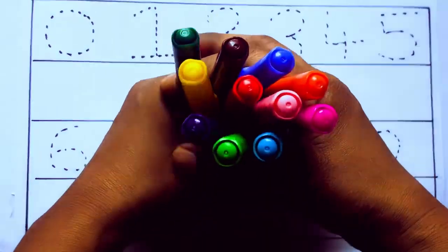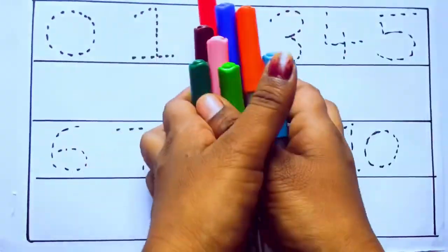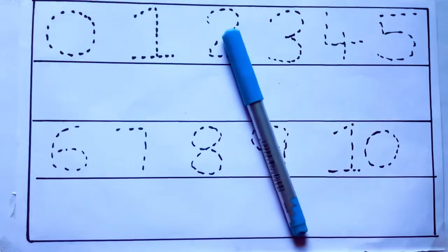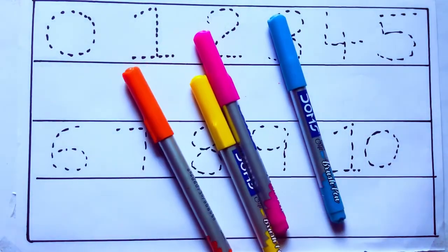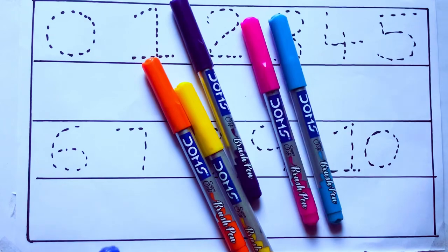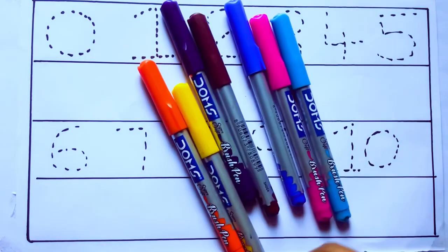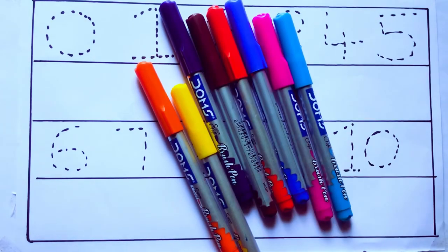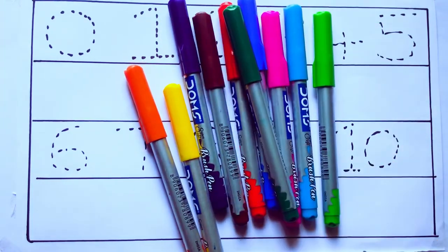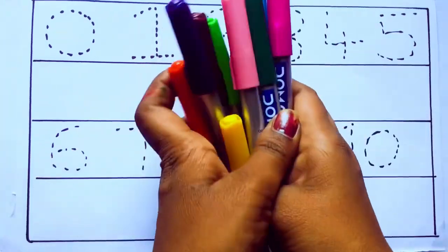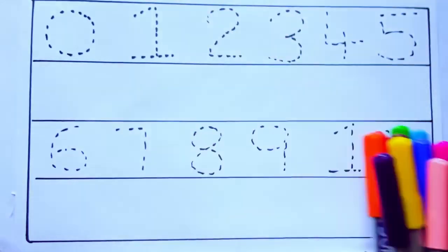Let's learn some colors. These are all the color pencils. Let's learn the names: sky blue color, pink color, yellow color, orange color, violet color, blue color, brown color, red color, green color, and pink color. Let's draw numbers.